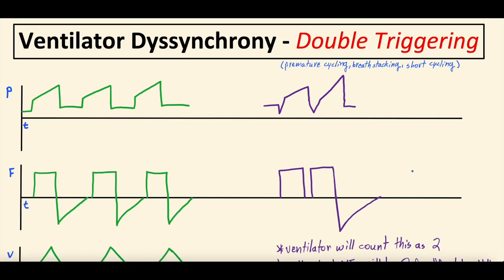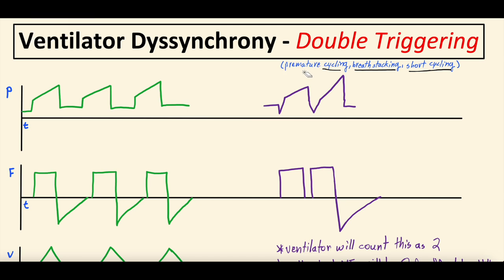Ventilator desynchrony — double triggering. Also known as premature cycling, some people call it breath stacking, others call it short cycling. A few different ways to say the same thing. You might hear different people refer to it differently, but those are all synonyms.